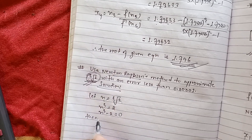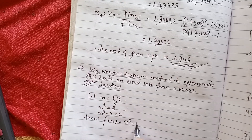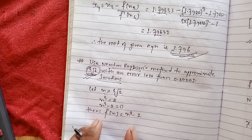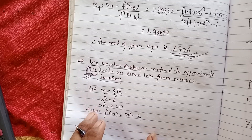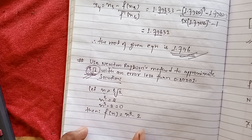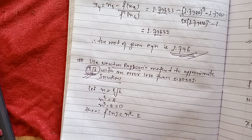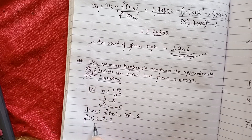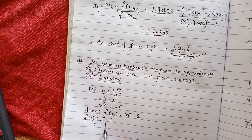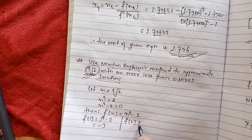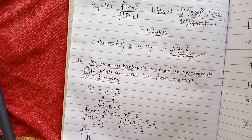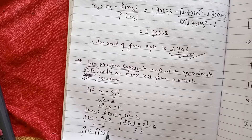So f(x) = x³ minus 2. We will check the value by substituting: f(1) = 1³ minus 2 = minus 1. Then f(2) = 2³ minus 2 = 8 minus 2 = 6. Multiplying f(1) × f(2) gives a negative value, confirming the root lies between 1 and 2.